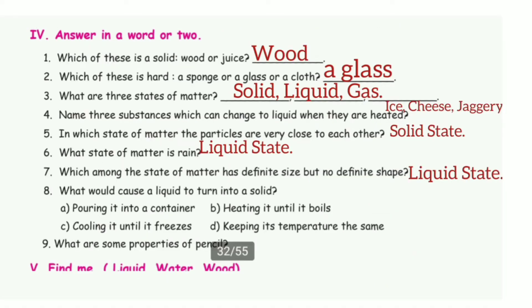Answer in one or two words. 1. Which of these is a solid — wood or juice? The answer is wood. 2. Which of these is hard — a sponge, a glass, or a cloud? The answer is a glass.